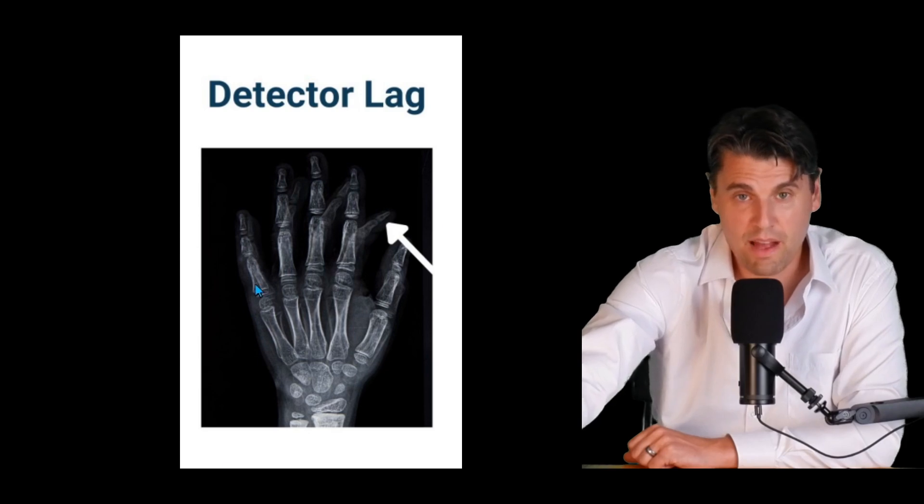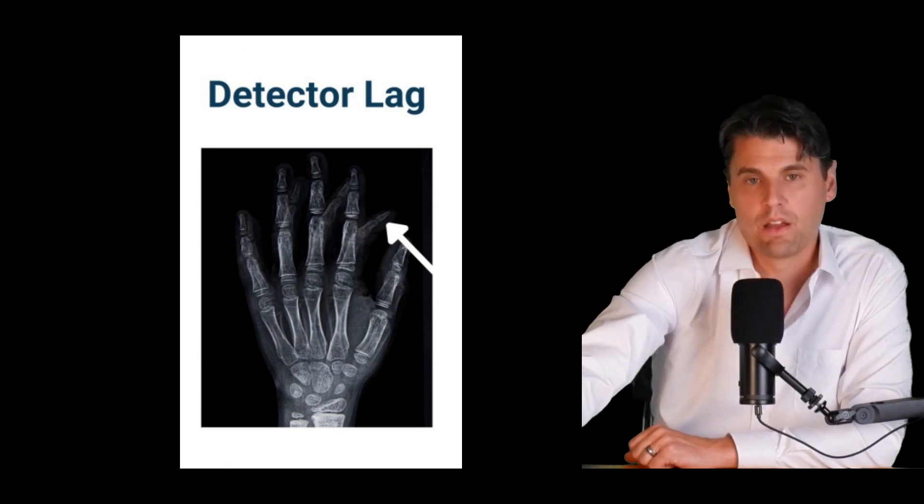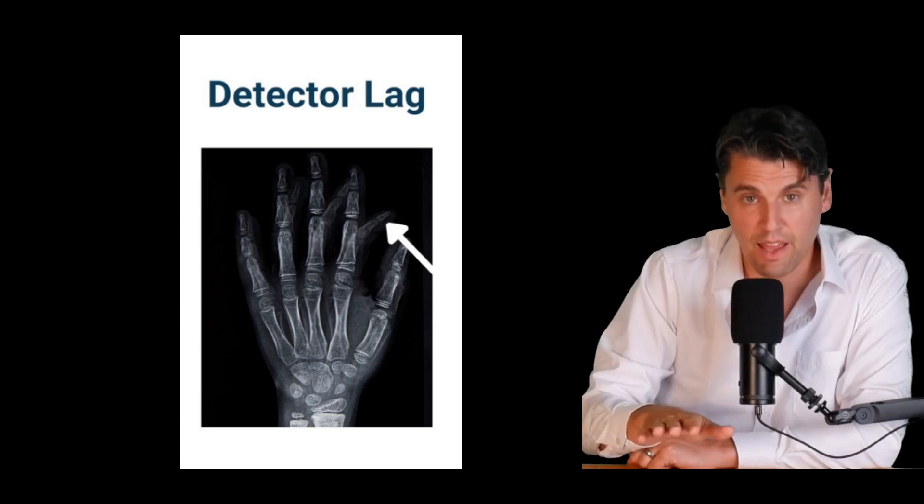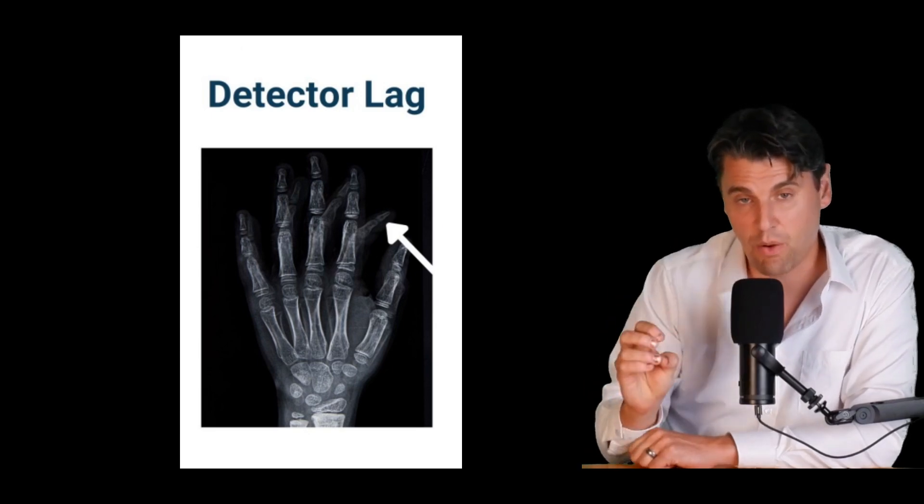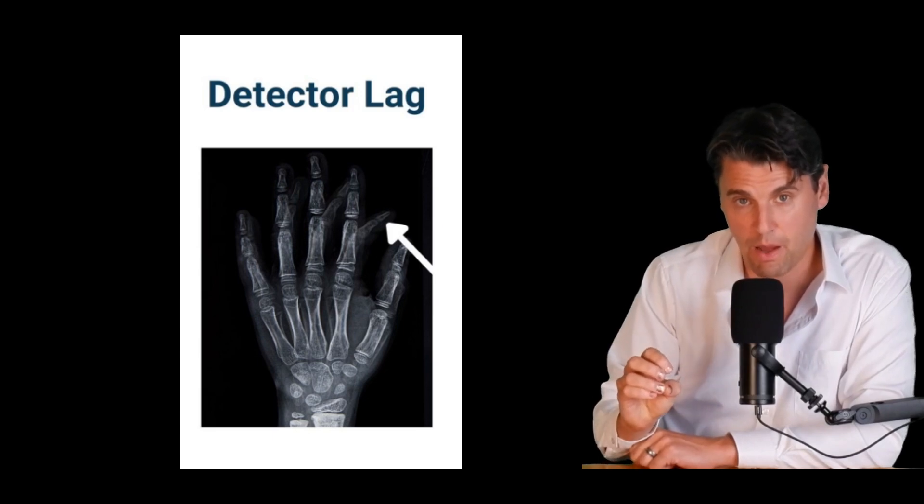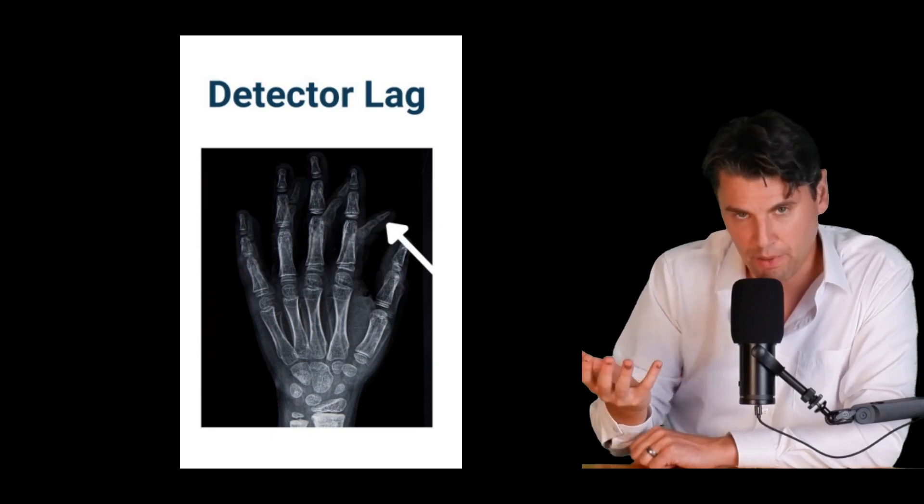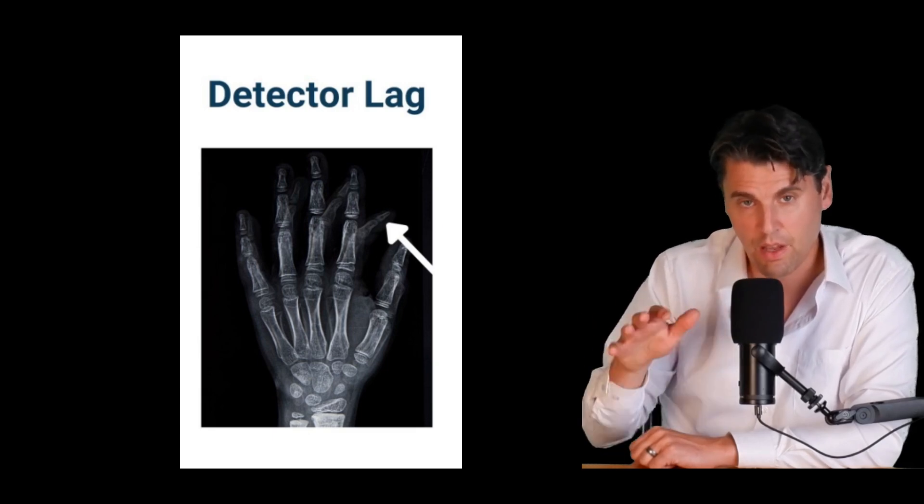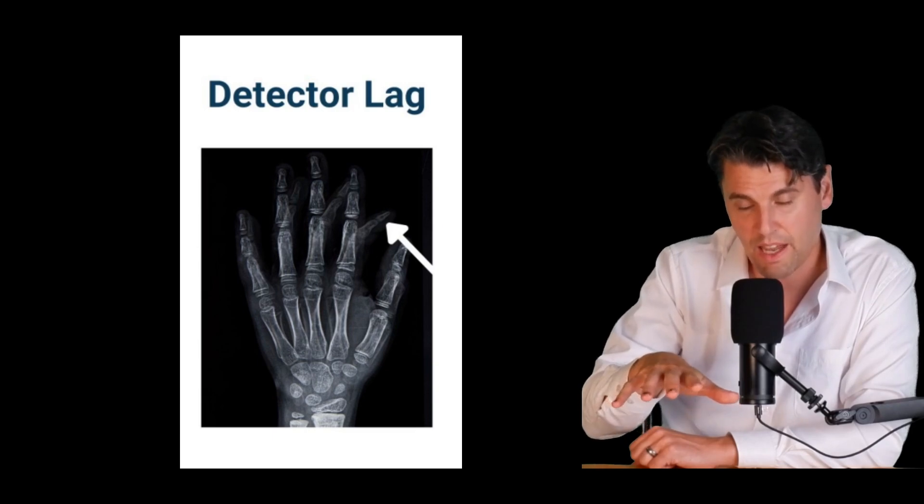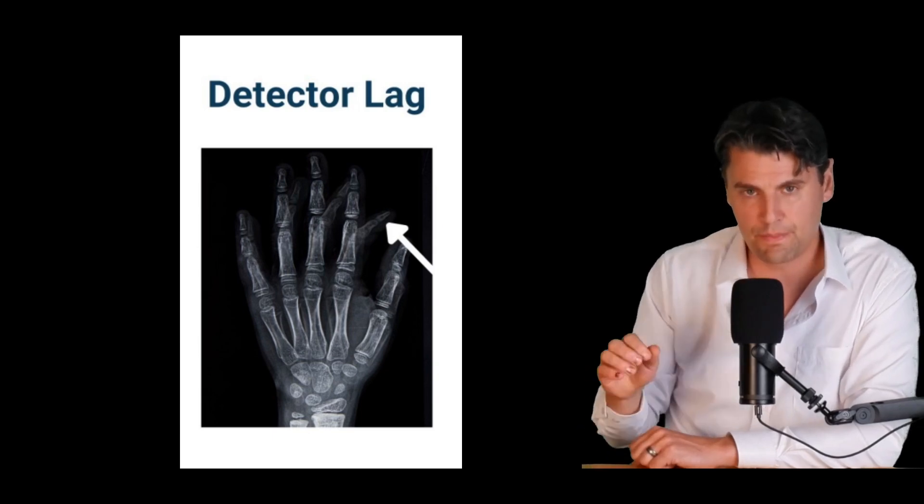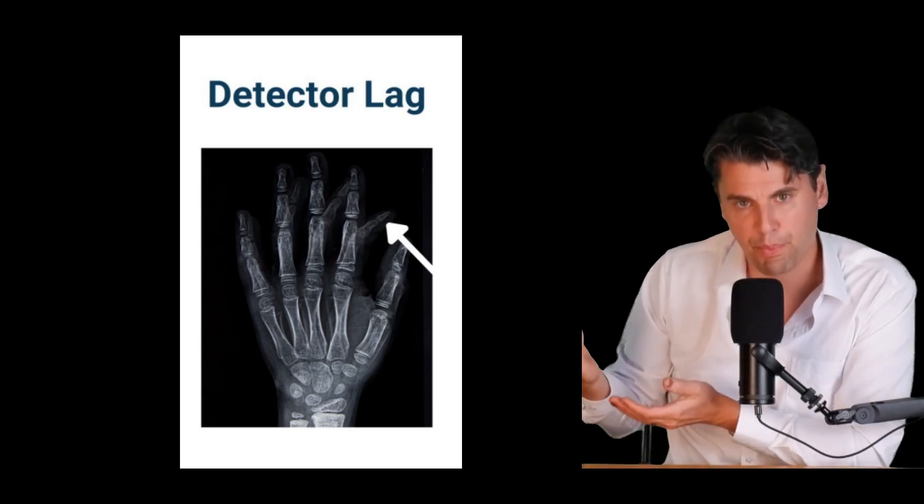There's also the possibility to have what we call ghosting in the image or detector lag where if you take an image acquisition and then you later take another acquisition this is now on a DR system that we're talking about. It has a similar visual effect to like the double exposure on the CR system where you took an acquisition and then there was motion and then you take another acquisition.